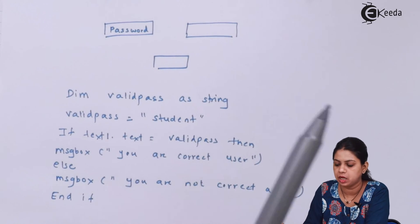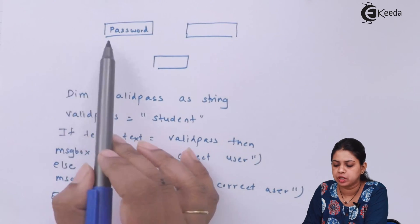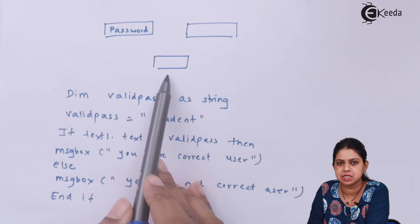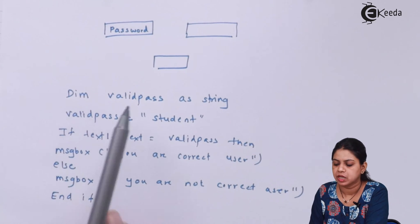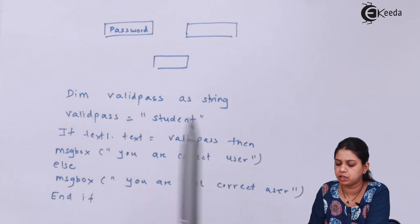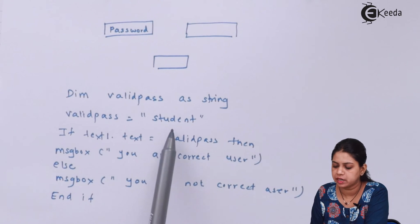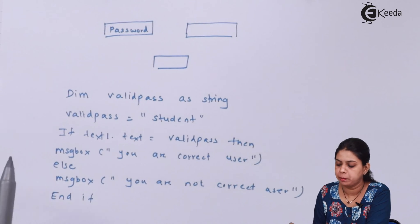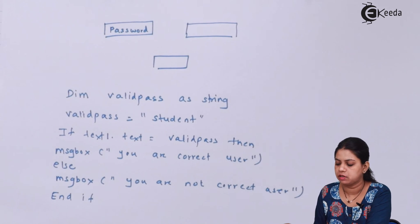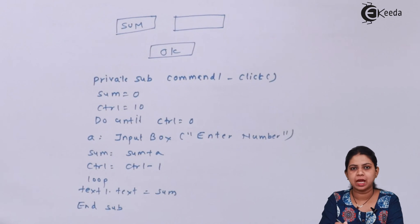You can rename the controls: label as lblPwd, text box as txtPwd, and command button as cmdOk. Write the code inside the cmdOk click event. Declare validPass as 'student' inside cmdOk. If the user enters 'student' in the text box they get 'correct user'; otherwise 'not a correct user'.